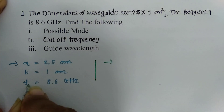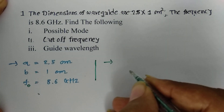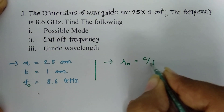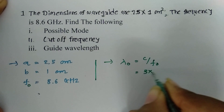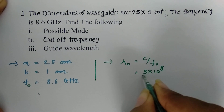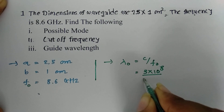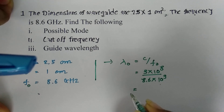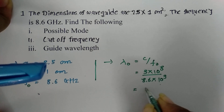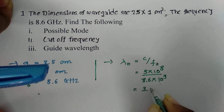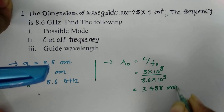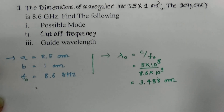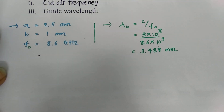The operating frequency is 8.6 GHz. The operating wavelength is given by λ₀ = C / F₀, where C is the velocity of light, 3 × 10⁸. Dividing by 8.6 GHz, we get the value of λ₀ = 3.488 cm. This is the operating wavelength for our case.